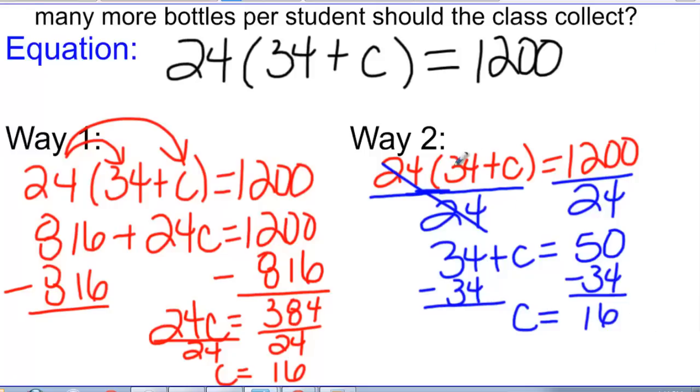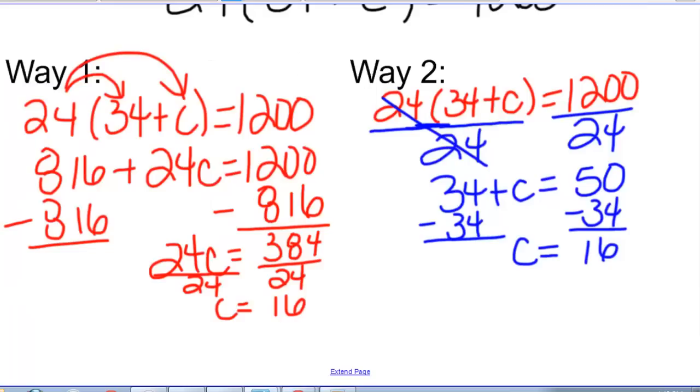You can see I get the same solution either way. It's just that this way I'm sort of chunking this 34 plus c into one term and thinking of this first as a multiplication equation. Then once I've gotten rid of my term that I'm multiplying over here, then I'm doing the subtraction. The answer to the free response question is ruby red slippers.